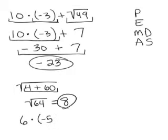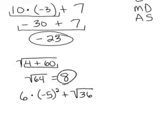Let's try another one: 6 times negative 5 squared plus the square root of 36. Here I have an exponent with parentheses and a square root — they're both the same level in order of operations, so I do them in order from left to right. I'll deal with the exponent first. When you have an exponent outside a set of parentheses, it means you take whatever is inside to that power. Inside the parentheses is negative 5, so I do negative 5 times negative 5. A negative times a negative is a positive, and 5 times 5 is 25.